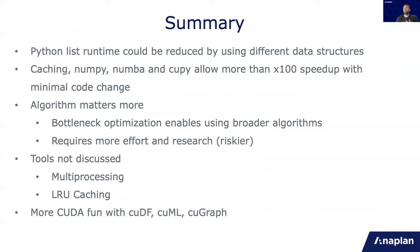So for summary, Python list could be reduced using different data structures and caching. We used also NumPy, Numba, CuPy and achieved more than 1,000% speedup, which is 10x numerical speedup with minimal code change. Algorithm matters more. So bottleneck optimization allows us to use broader algorithms. However, it always increases the performance. If we are going to research and change the algorithm, it requires more effort. And also it might not work because it is research.